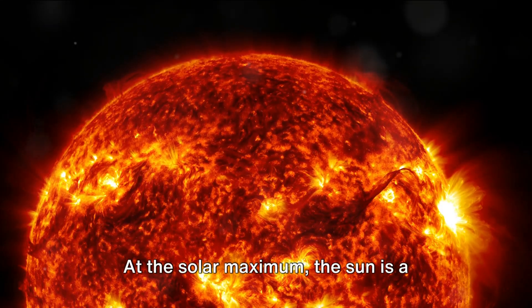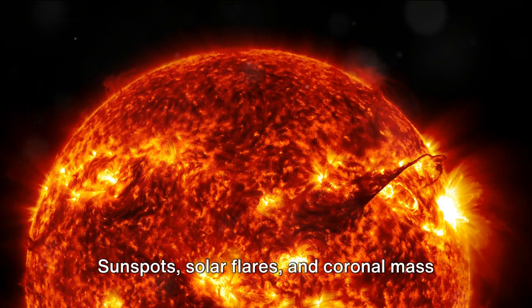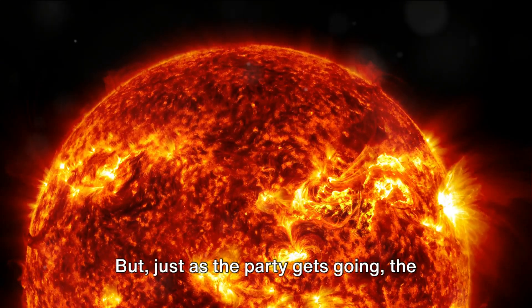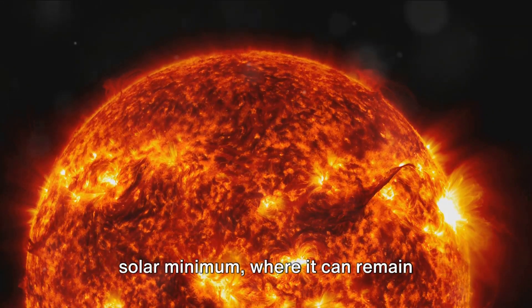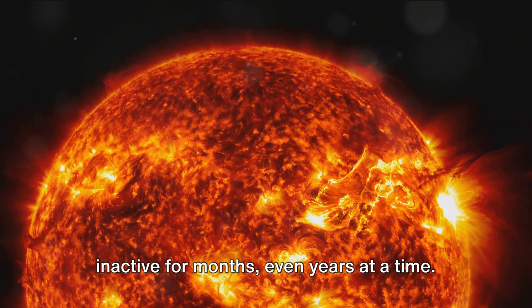At the solar maximum, the Sun is a cauldron of activity. Sunspots, solar flares, and coronal mass ejections become frequent guests on the Sun's surface. But just as the party gets going, the Sun enters a period of dormancy during the solar minimum, where it can remain inactive for months, even years at a time.